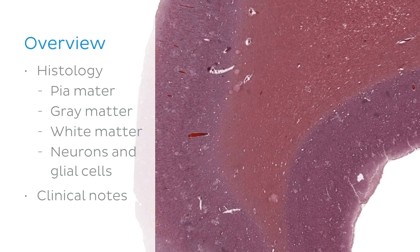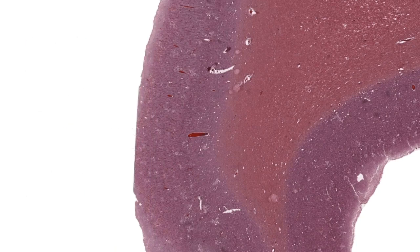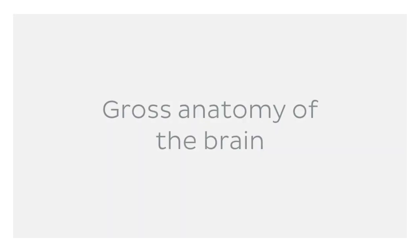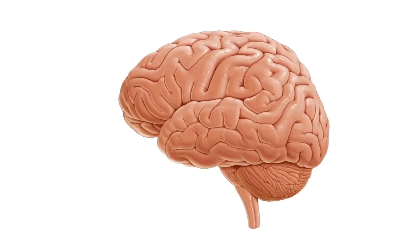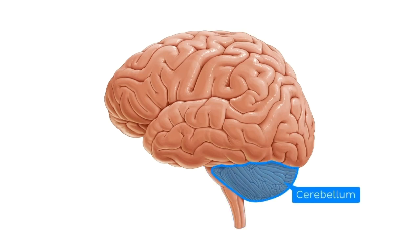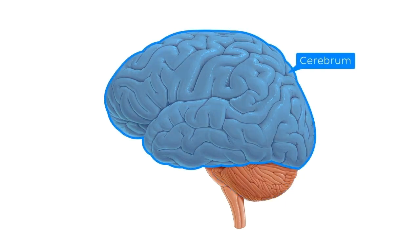But before we jump into the histology of the cerebral cortex, let's have a quick refresher on the gross anatomy of the brain. If we look at the brain from a lateral view, there are a few major parts we can identify. We have the brain stem, which is the connection between the brain and the spinal cord. The cerebellum, which plays a major role in motor control, as well as some cognitive functions. And finally, we have the cerebrum, the largest part of the brain, responsible for higher functions and the focus of today's tutorial.